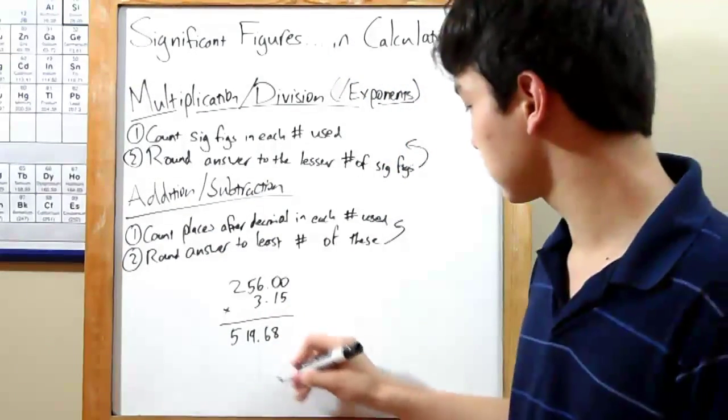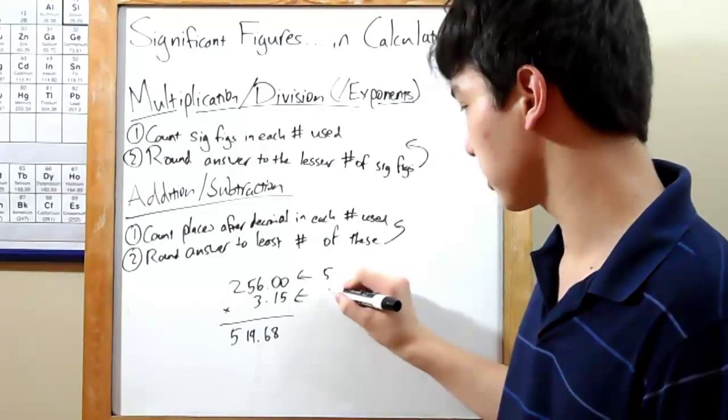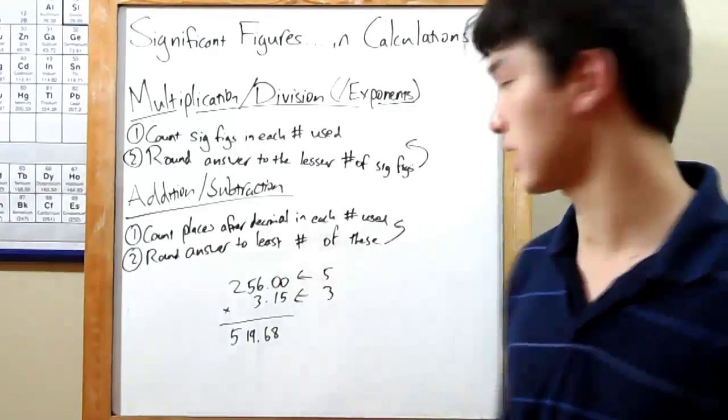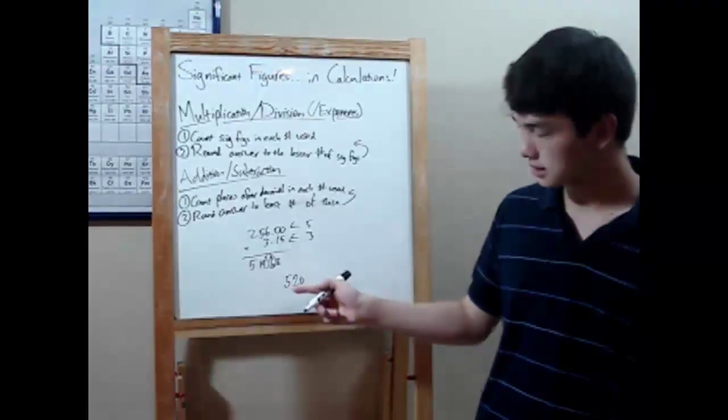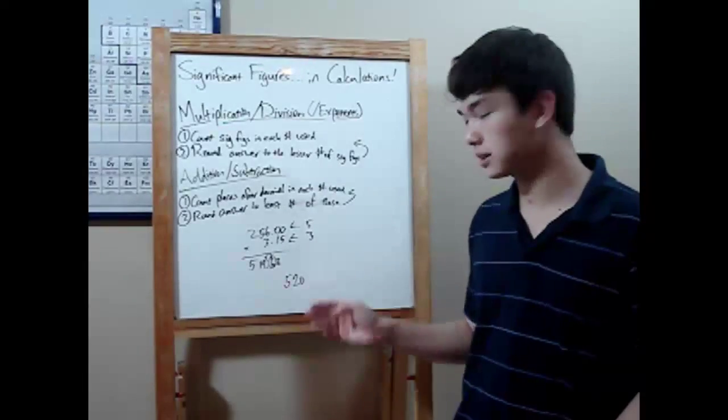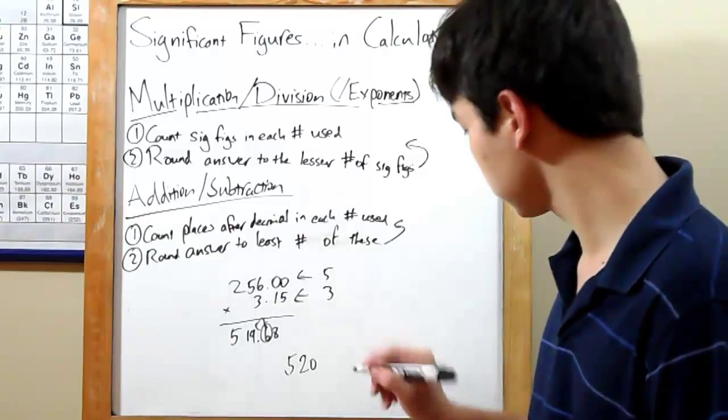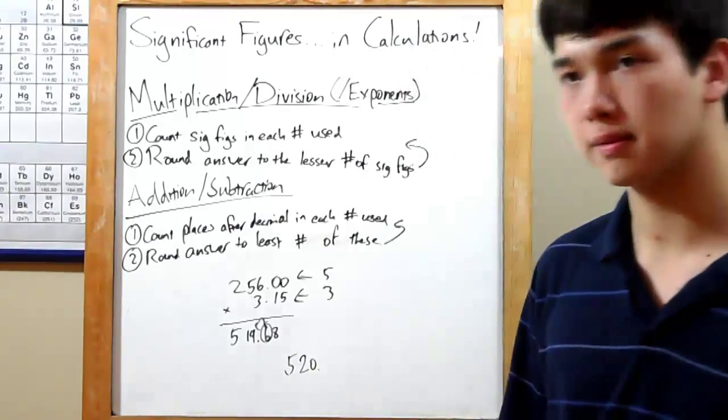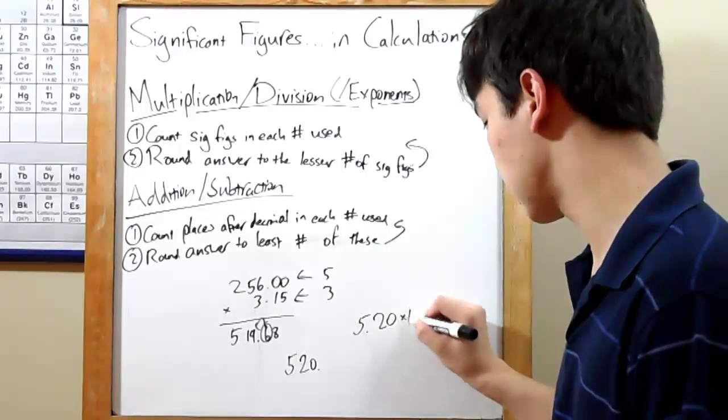Round to your significant figures. 256.00 is 5, 3.15 is 3. Round to three significant figures. Rounding up gives you 520. Now wait, that's actually only got two significant figures. That 0 is not significant because there's no decimal point. Well, there are two ways to remedy this. Either you put a small decimal point here, or preferably write it in scientific notation, 5.20 times 10 to the second power.